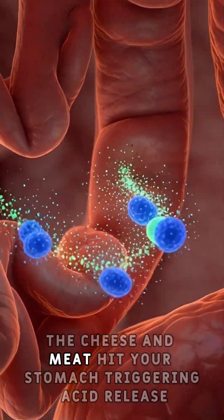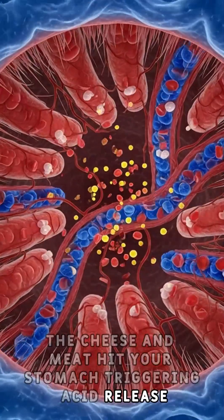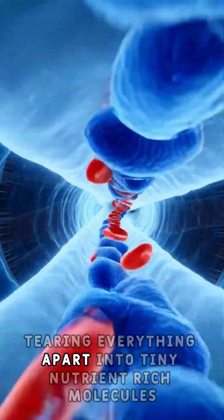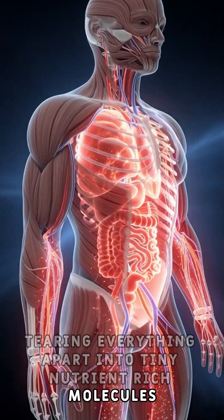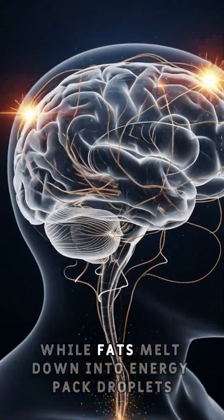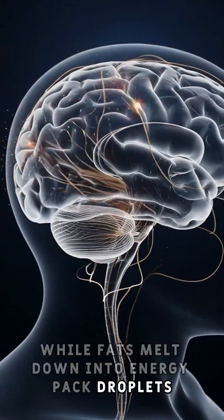The cheese and meat hit your stomach, triggering acid release. The stomach walls start squeezing in waves, tearing everything apart into tiny nutrient-rich molecules. The cheese and meat proteins break into amino acids, while fats melt down into energy-packed droplets.